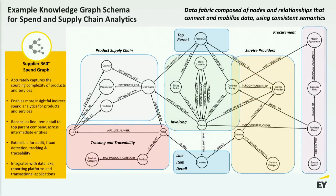Here are some example designs. In supply chain and contracting, you might have a graph design where each circle could be a table in a SQL environment with millions of records — in a graph, those are all loaded as nodes with a common set membership by label. Here we have product supply chain nodes, tracking and traceability, invoicing, contract entities, who the actual service provider is, complex hierarchy potentially tying to master agreements. This might be a solution for a chief procurement officer who wants much better reporting.